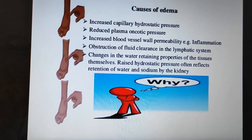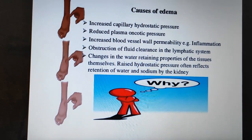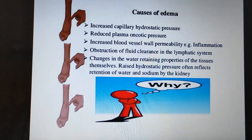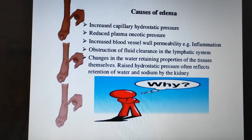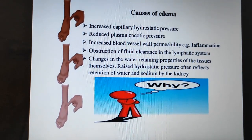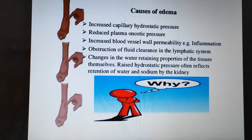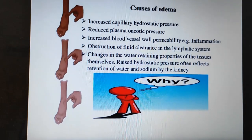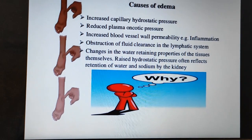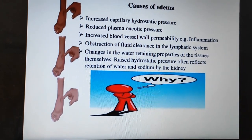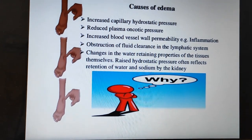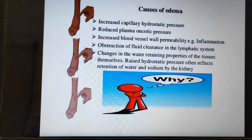Another mechanism is obstruction of fluid clearance in the lymphatic system. If the lymph channels are blocked, edema results — this is seen in tumors and diseases like filariasis. Additionally, changes in the water-retaining properties of the tissues themselves is also a mechanism. Increased capillary hydrostatic pressure is mostly seen in kidney disease.